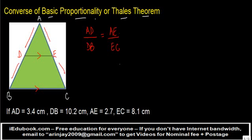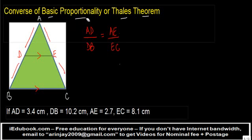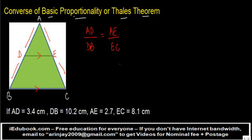Now when we say the converse of proportionality theorem, what we mean is, as a result, what follows is that if in a given triangle, AD upon DB is equal to AE upon EC,